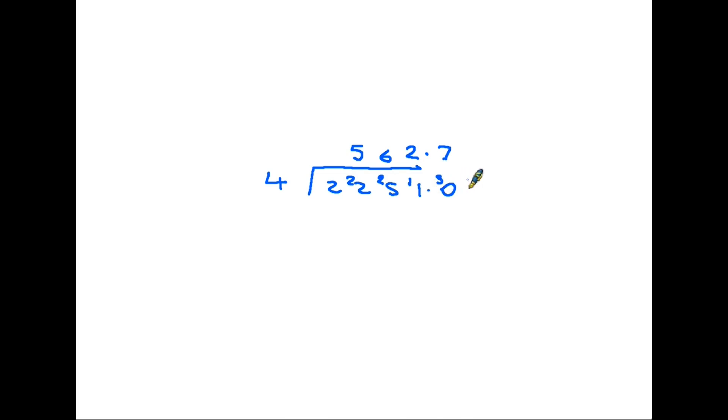Now 7 fours are 28, so we have 2 remaining. So the 2 goes on the next column, and we put another zero. How many fours in 20? And the answer is 5: 562.75.